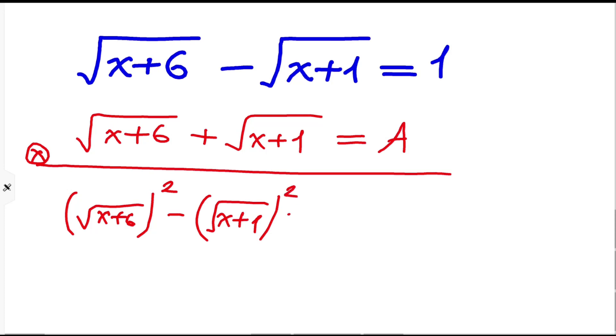That equals one times A, which is A. Then we cancel the square root and square: x plus six minus x plus one equals A. So A is five. This is the first part of our solution.